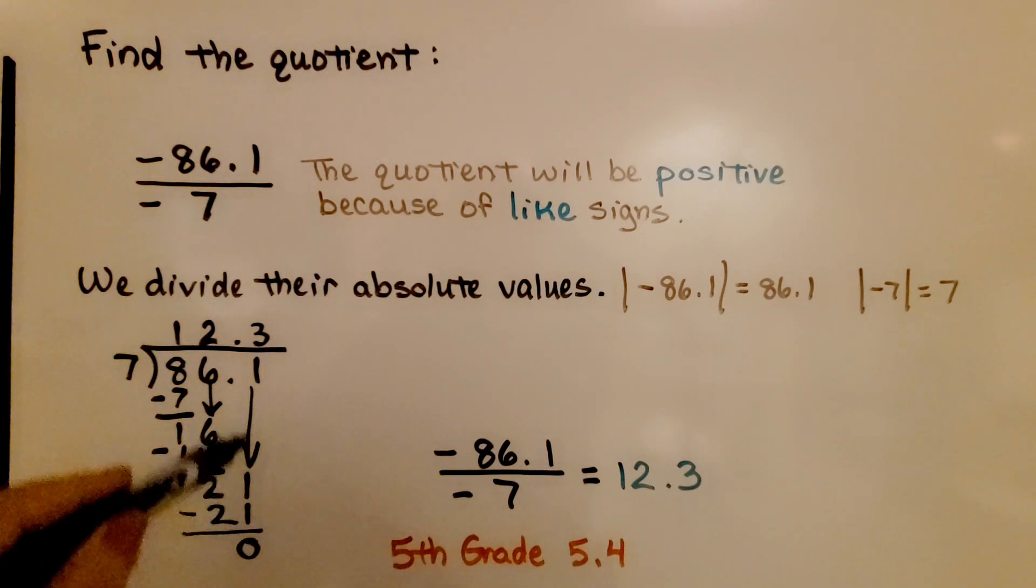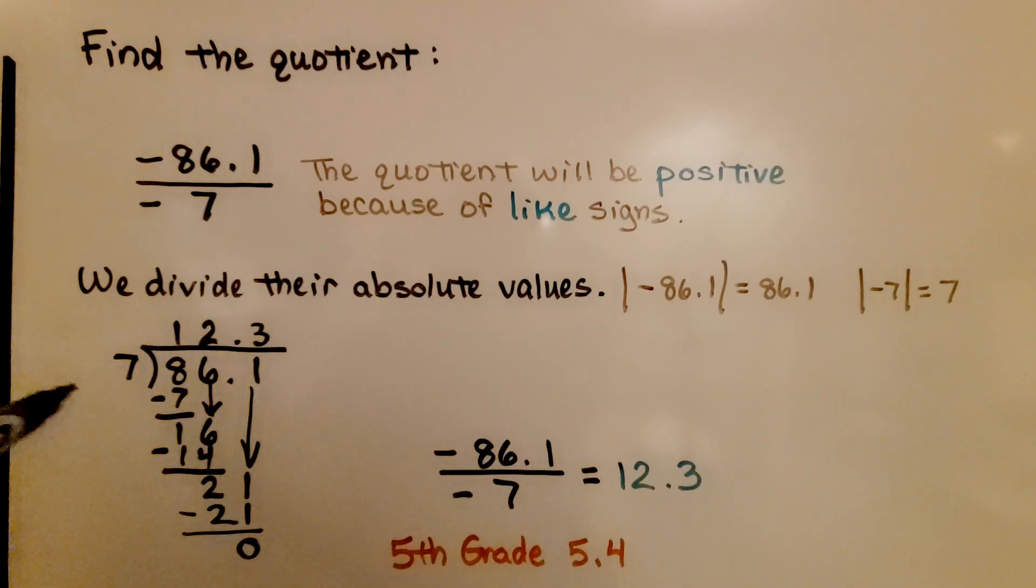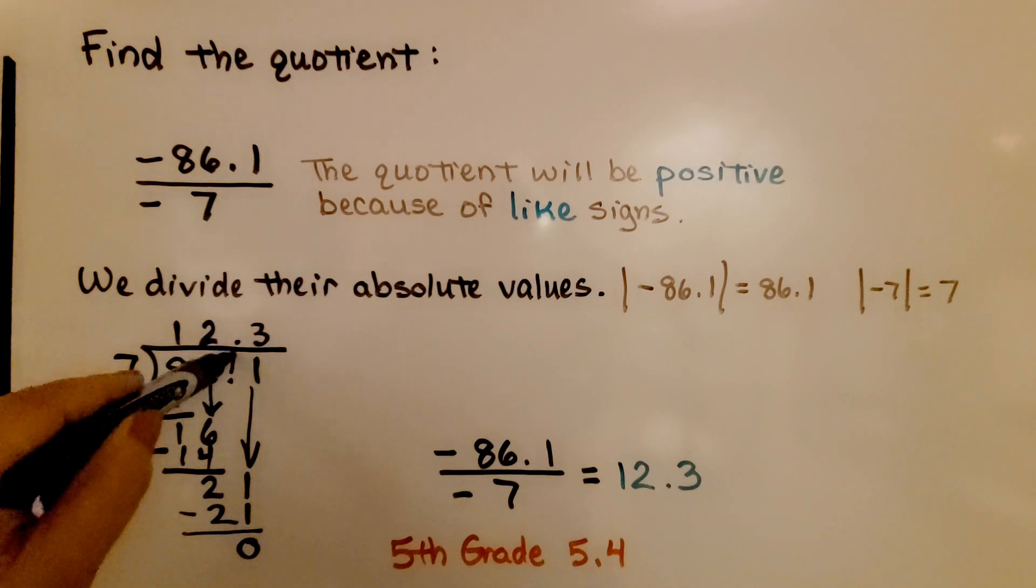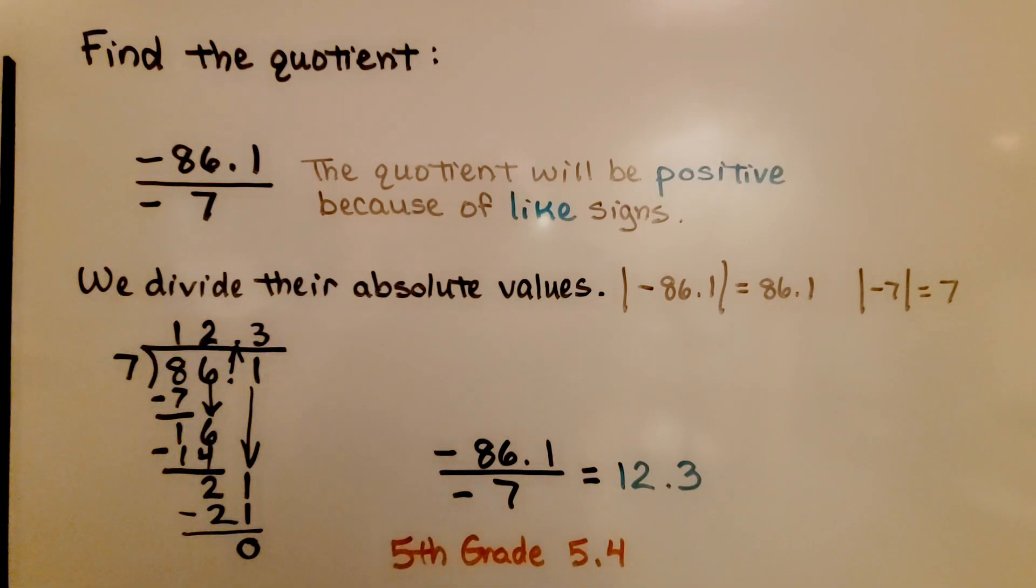Now this 1 drops down. 7 fits into 21 three times. 7 times 3 is 21. We get a zero remainder. The decimal point goes straight up. We get 12.3. And we know it's a positive 12.3.